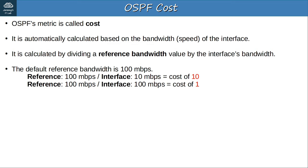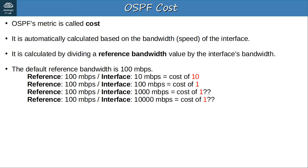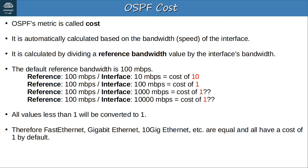A fast Ethernet interface with a speed of 100 megabits per second has an OSPF cost of 1, because 100 divided by 100 is 1. A gigabit Ethernet interface has a cost of 1, even though 100 divided by 1000 equals 0.1. A 10 gig Ethernet interface also has a cost of 1, even though 100 divided by 10,000 equals 0.01. In OSPF, all values less than 1 will be converted to 1. Therefore fast Ethernet, gigabit Ethernet, and 10 gig Ethernet all have a cost of 1 by default.